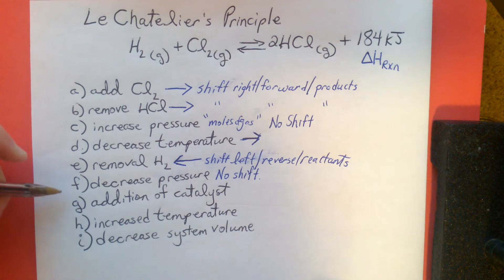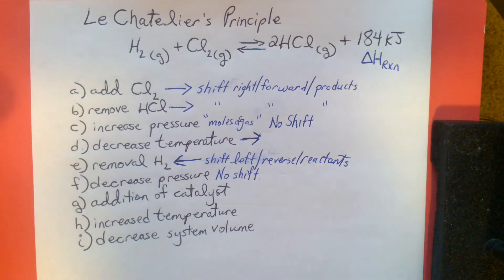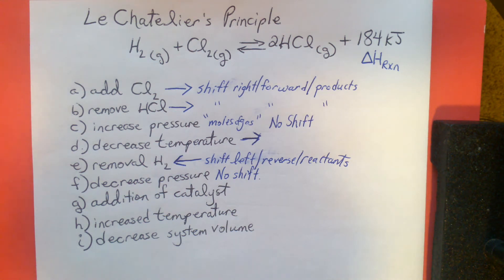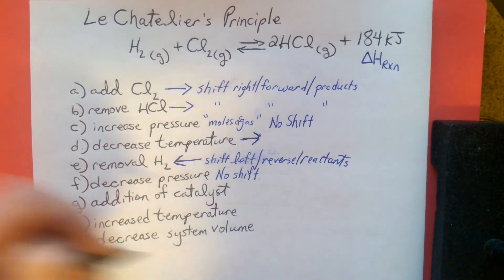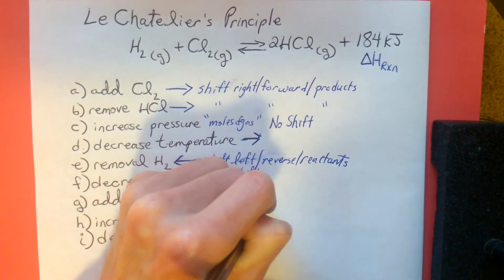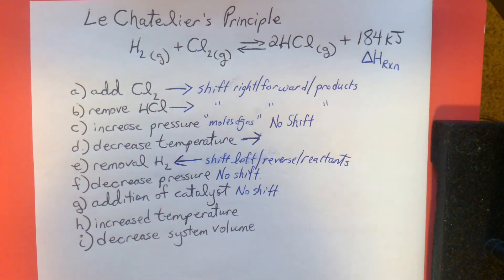Letter G: addition of a catalyst. A catalyst increases the rate of both the forward and reverse reactions equally. Catalysts do not shift the equilibrium or cause a change in the K value — the expression value. So with addition of a catalyst, there's no shift. It doesn't favor the forward or reverse reaction; it speeds up the reaction equally in both directions, so there's no net shift.